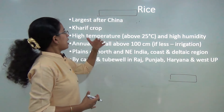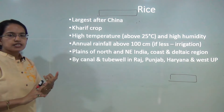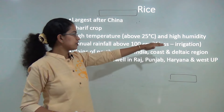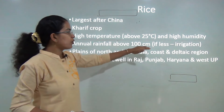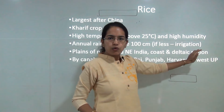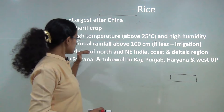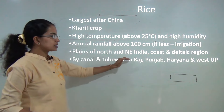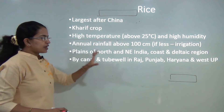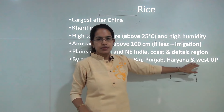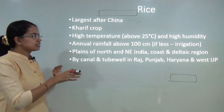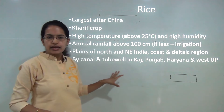Rice: After China, India is the largest producer. It is a Kharif crop requiring high temperature — more than 25 degrees Celsius — with high humidity, and rainfall more than 100 centimeters. If rainfall is less, paddy cultivation is possible only through irrigation. Most plains of north and northeast India, coastal and delta areas have rice cultivation. Rajasthan, Punjab, Haryana, West Uttar Pradesh, and parts of Gujarat have good rice cultivation through canal and tube well irrigation.